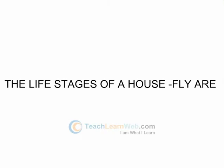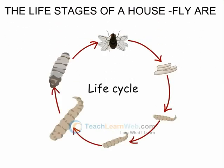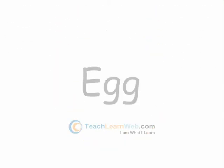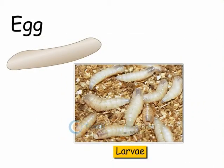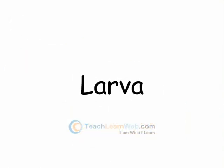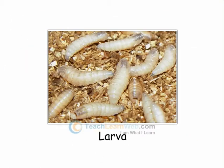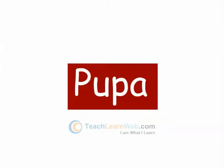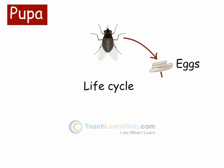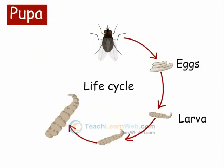The life stages of a housefly are: Egg — they are white and cylindrical and hatch in 24 hours into larvae. Larva — it is also known as a maggot; it is white in color and feeds on organic matter. Pupa — a fully grown larva moves into a dry place and changes into pupa. In a week, the pupa changes into an adult or imago.